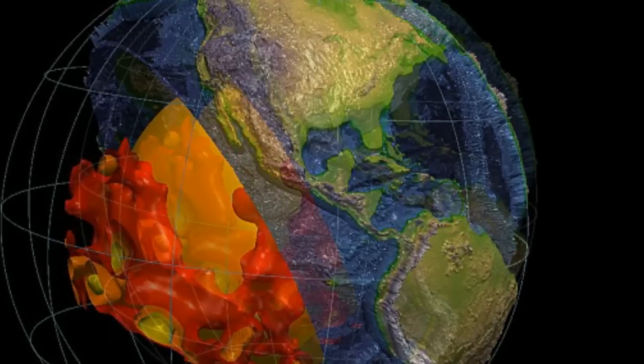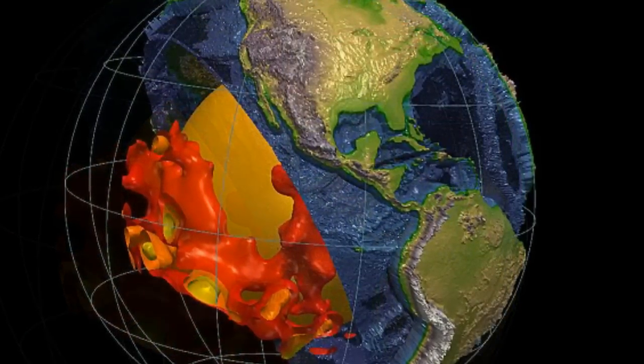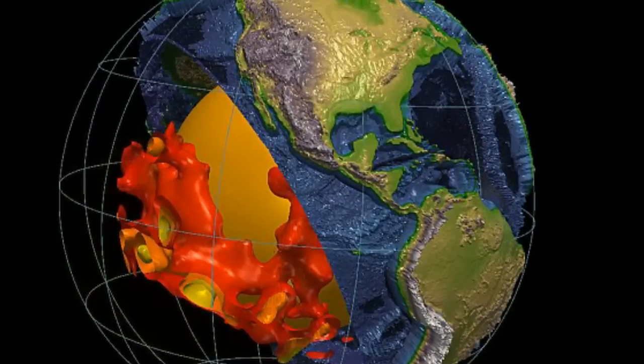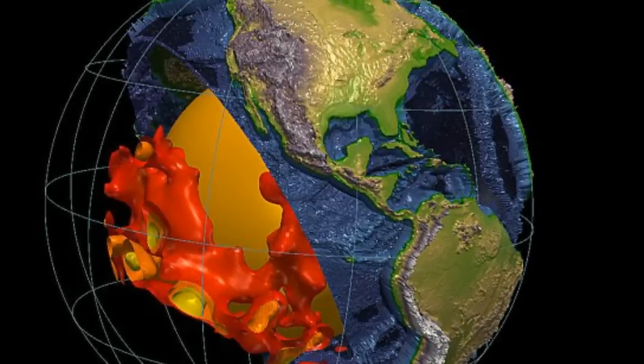Also known as thermochemical piles, it's long been thought that these blobs are made up of mantle materials, though warmer than average. This is the result of upward movement from the slow churning of hot mantle rock, similar to a lava lamp.